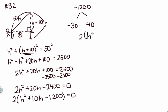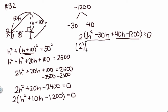So I have 2 times (H squared minus 30H plus 40H minus 1200) equals 0. You're gonna factor by grouping, so group those together and take out the common factor. For this one I have H, and if I take that out it's H(H minus 30). Plus, for this one I can take out a 40, so if I take out 40 I have 40(H minus 30).